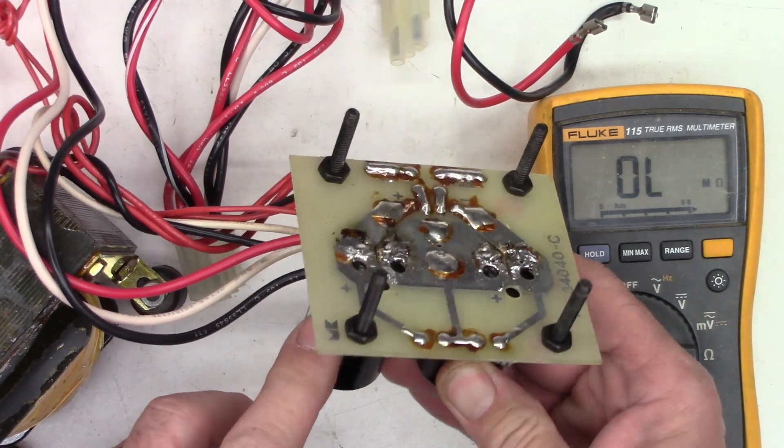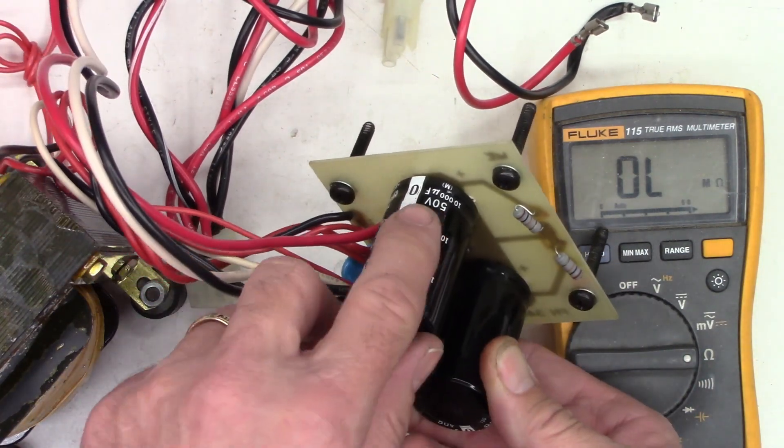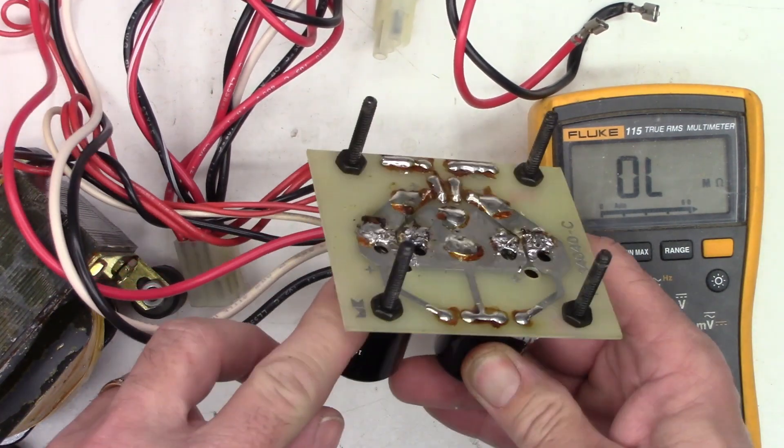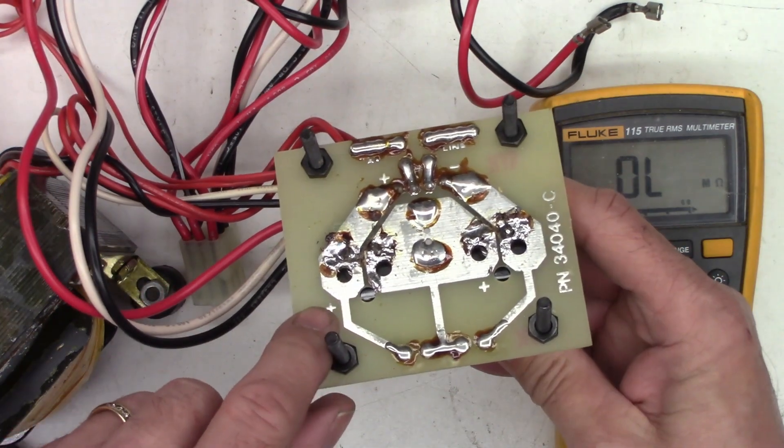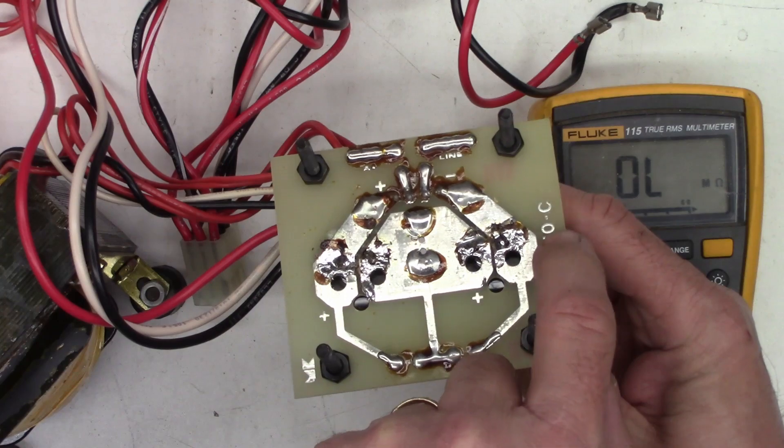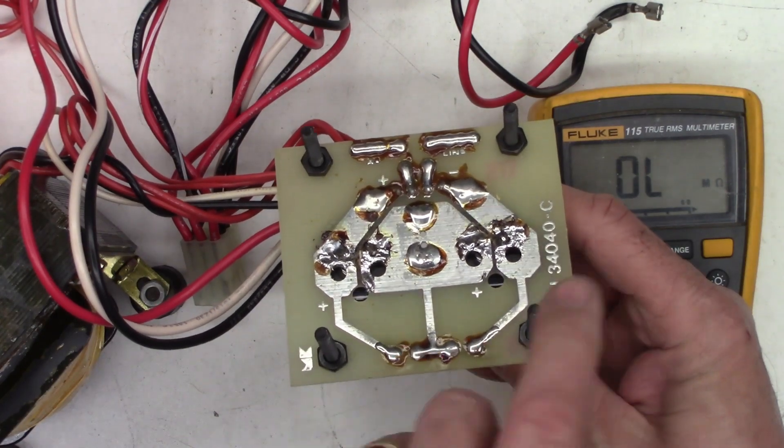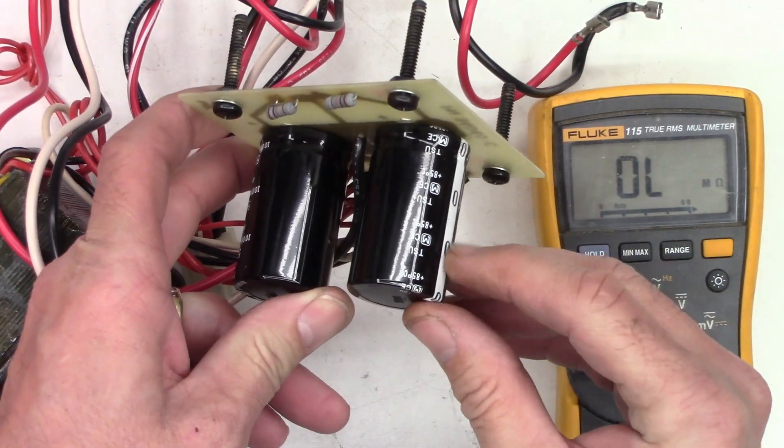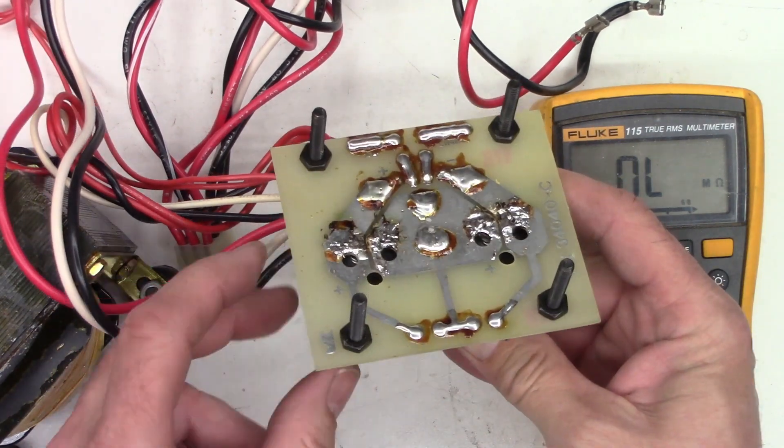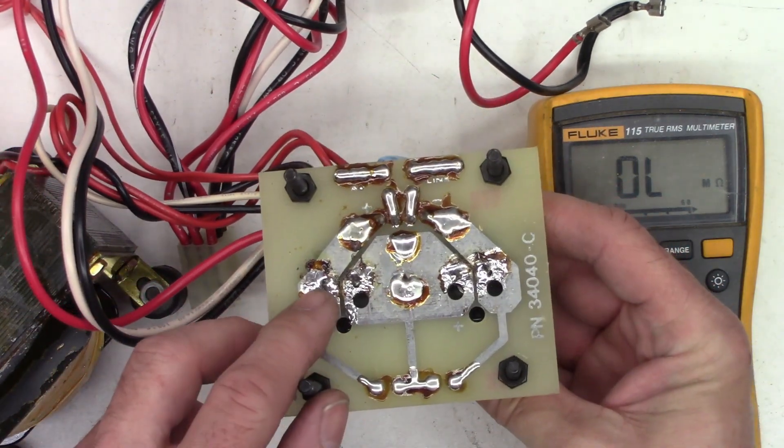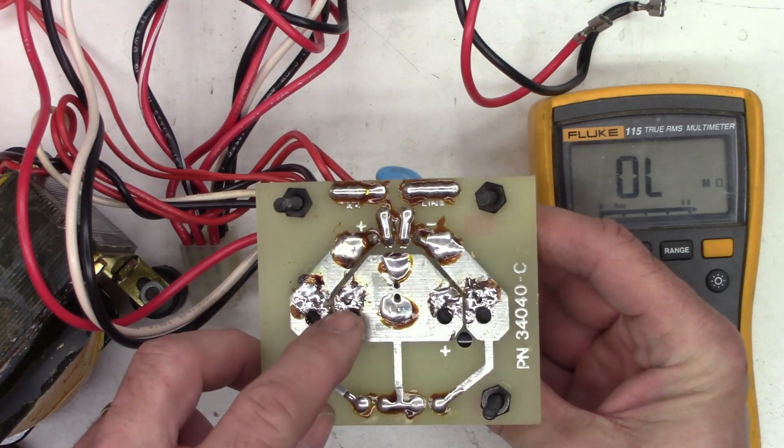Now this one does have a couple of equalizing resistors here across the capacitors. And it looks like they're 10K resistors. Physically, they're attached to the board, so that's good. So right off the bat, this capacitor right here is installed incorrectly. Once again, there's the positive. You can see the positive mark right here. So on both of these capacitors, the negative should be on the right hand side of your screen. And as you can see, this one is correct. This one is backwards. So we'll have to correct that.